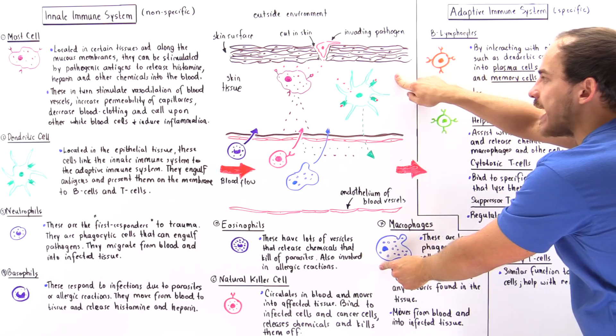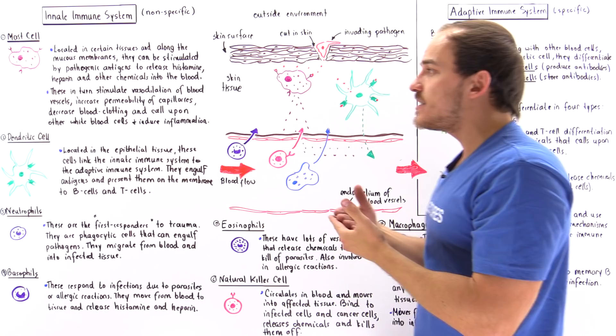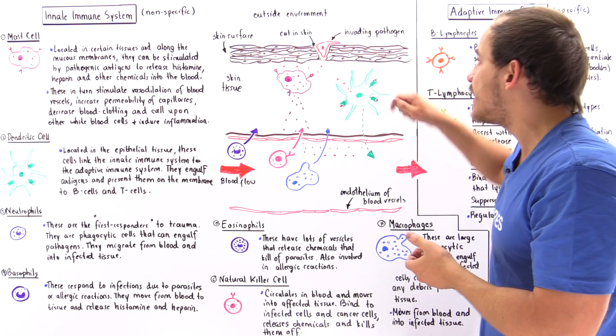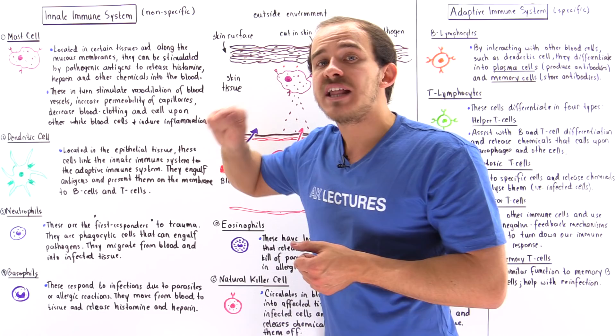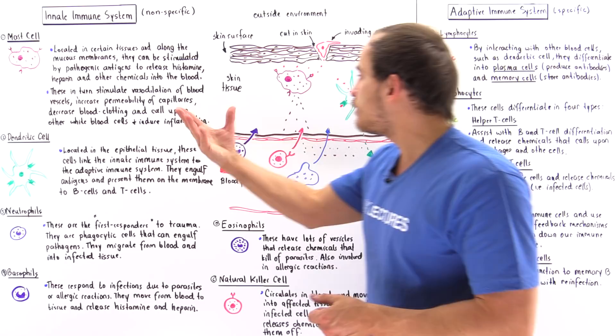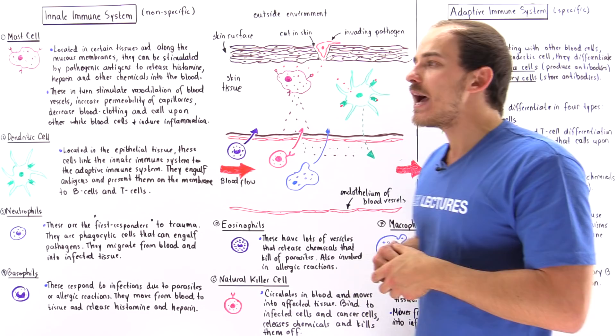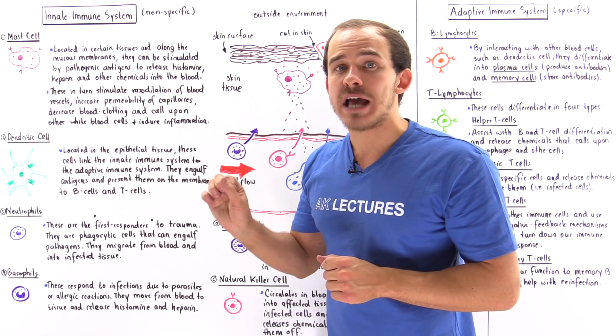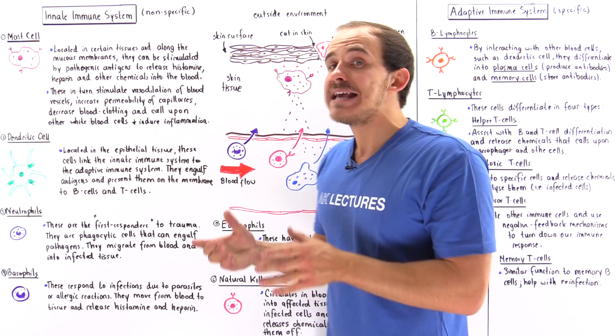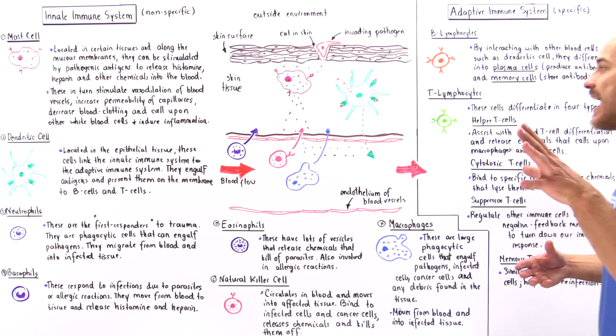The plasma cells produce antibodies that are released into our blood system. These antibodies bind to specific antigens and, once bound, label them for destruction by cells like macrophages, neutrophils, and other cells. Memory B cells remain with us for the duration of our lifetime and keep a copy of the antigen in case reinfection occurs. If reinfection does take place, they elicit a secondary immune response that is much quicker and more efficient than the primary immune response.